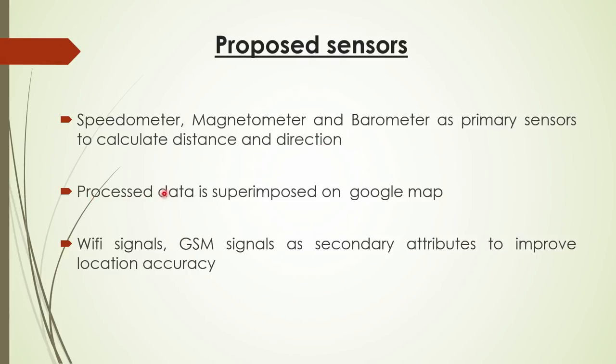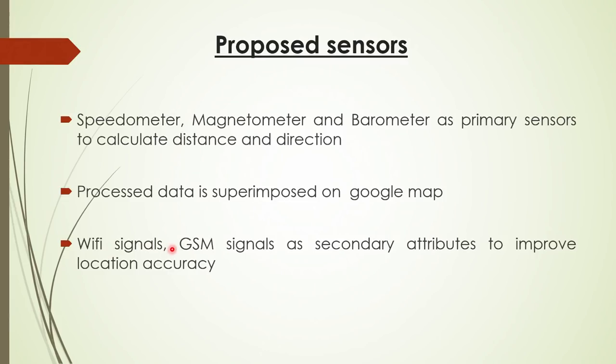Now this is important: process the data. What happens if you do not process the data — I will show you something which will be superimposed on Google Maps. As the vehicle goes under thick tree cover, if there is a GSM signal or free WiFi available on the wayside, you may want to augment those signals to improve location accuracy, using them as secondary attributes.